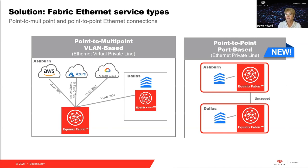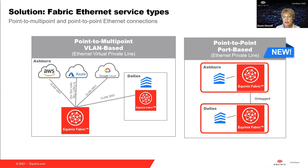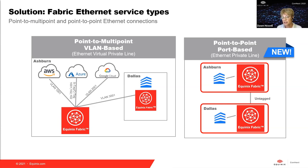Let's talk about how you create connections across the fabric. From a Layer 2 Ethernet perspective, we offer both VLAN-based and port-based connectivity. In the VLAN-based scenario — sometimes known as EVPL, or Ethernet Virtual Private Line — you can have a single fabric port or even a virtual device in a metro, and from that device or port you can create multiple connections. You can create connections to multiple cloud providers, or have a connection to your presence in another Equinix metro. For example, a customer in Ashburn can have connections to cloud providers and also connect to their presence in Dallas, all from the same port.